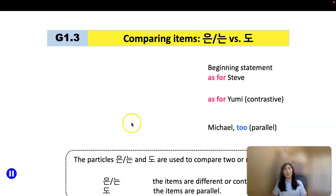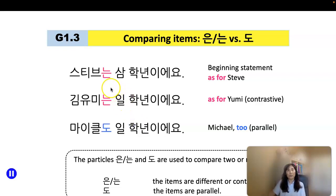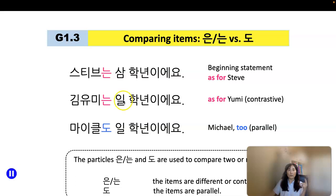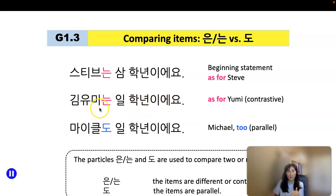Now let's go to Korean examples. The beginning statement generally uses 은/는, associated with grammar 1.1, the topic particle. For example: 스티븐은 3학년이에요. Then for the next person, 김유미는 1학년이에요. When it comes to school year they are different, so by adding particle 은/는 to 김유미, it signals that she is different from the previous person in terms of school year.